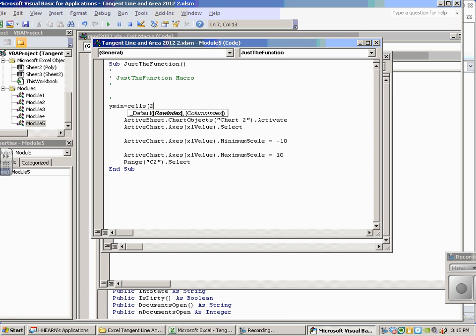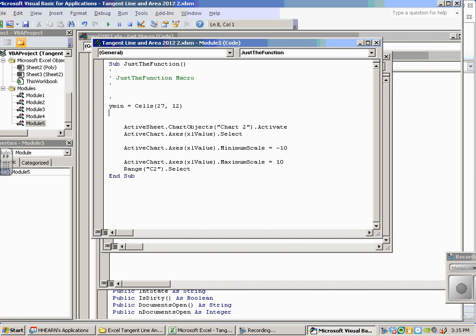Ymin equals cells. Now, it prompts me for a row. As you recall, my row is 27. Column. My column is L. Unfortunately, I can't put in L. It wants what column number I'm in. A-H-I-J-K-L is the 12th letter of the alphabet. So, 12. That's how I enter L27.